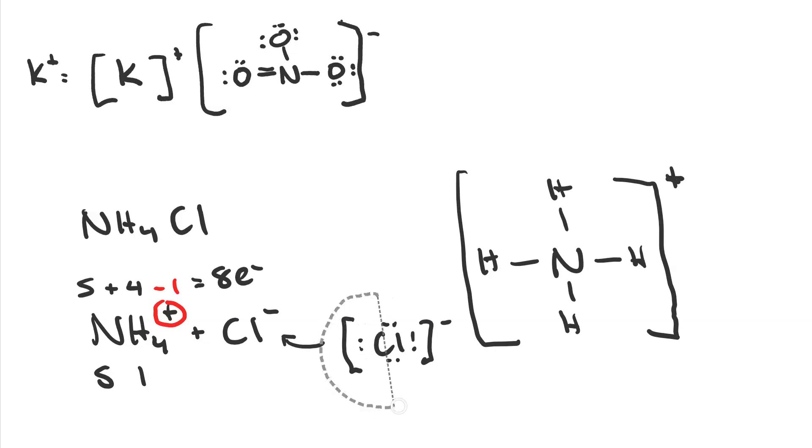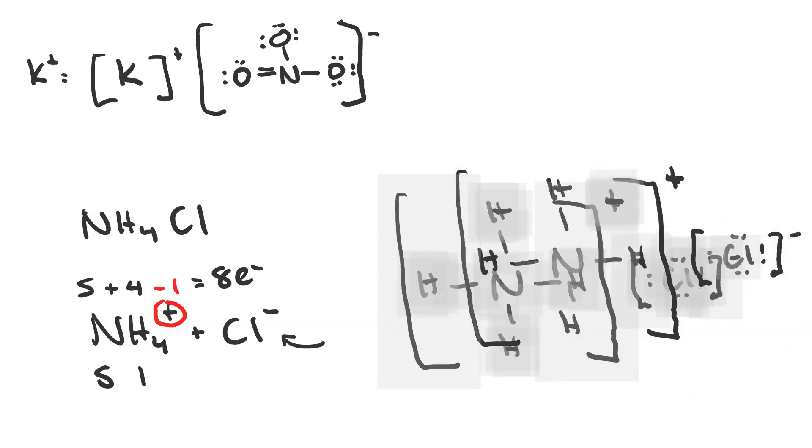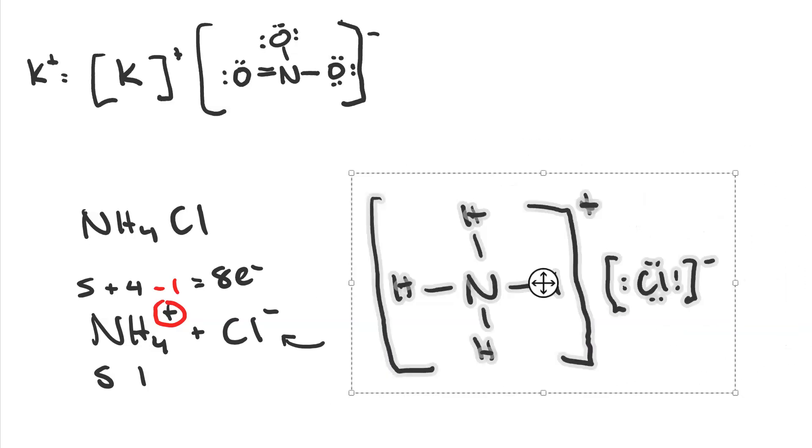And I'm going to just take this chloride ion and move it to the right, because we've been doing this in the format, first the cation and then the anion, although it doesn't really matter. So there's your Lewis structure for ammonium chloride.